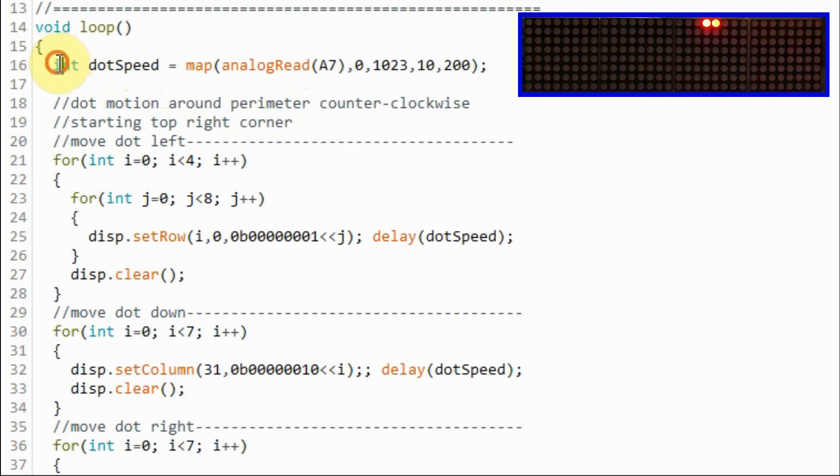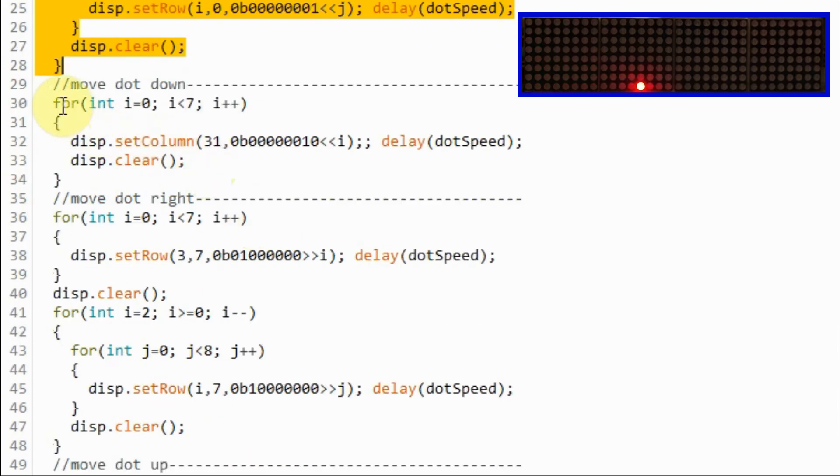So within the loop function, the first thing we need to do is to read the pot value and save it as dot speed. And using this for loop, we will move the dot to the left. And using this for loop, we will move the dot down.